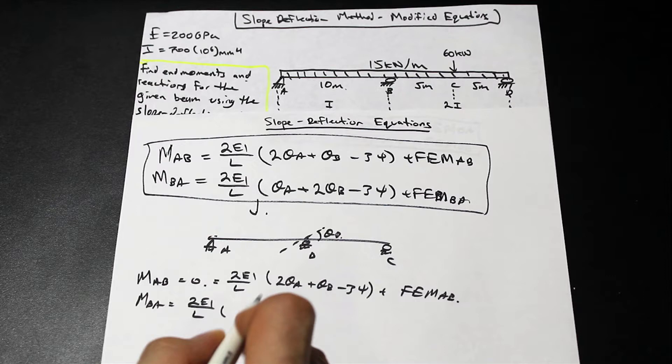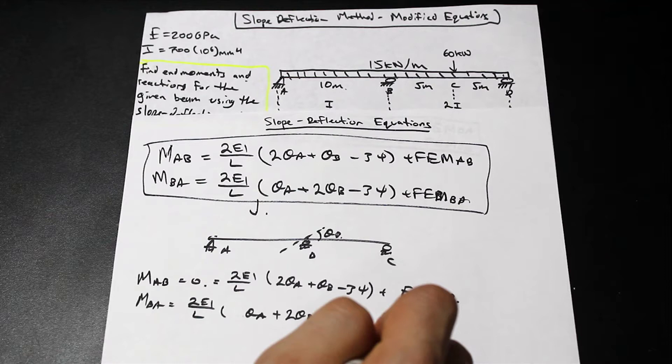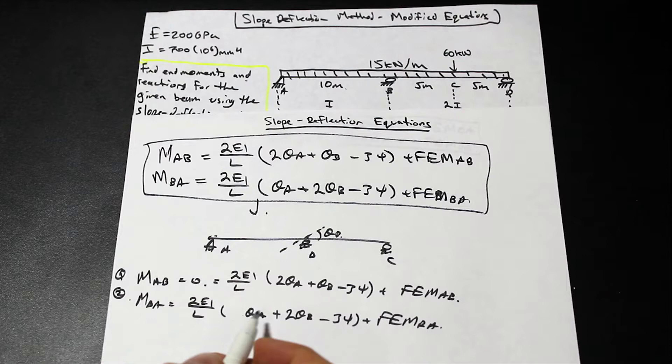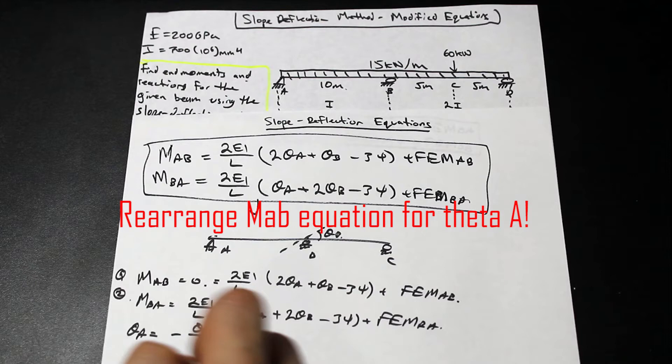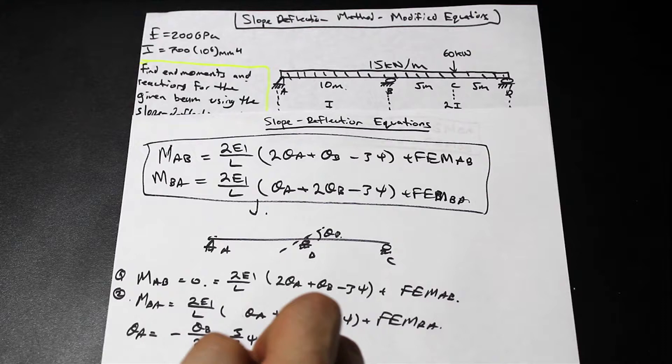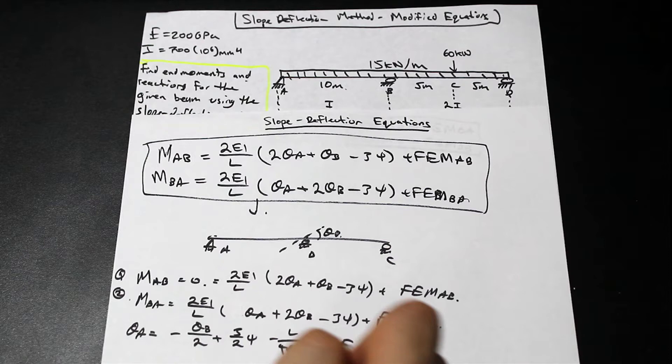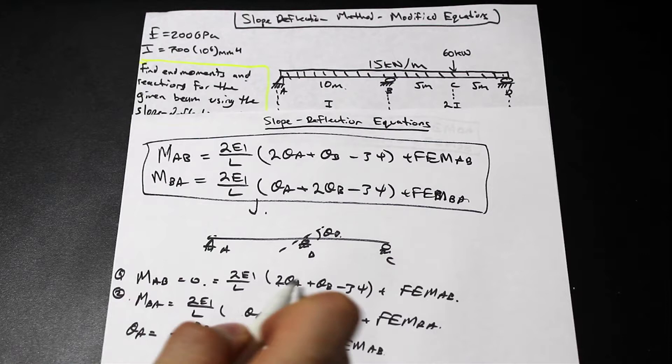What we're trying to do is eliminate the slope on the outside — theta_a — from the equation, so that we can have a simpler equation. If we rearrange this equation for theta_a, I'm not going to go over all the arithmetic of rearranging and solving for this variable — it's not too important and takes too much time. I just wanted to show you where this comes from so you can have a little more understanding.